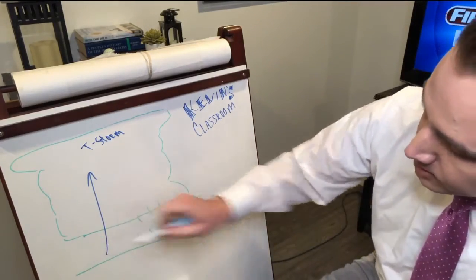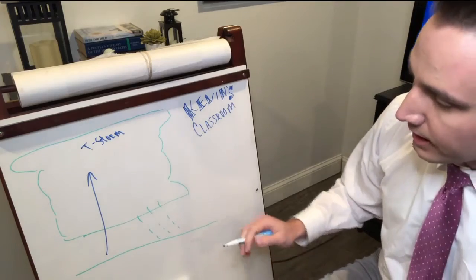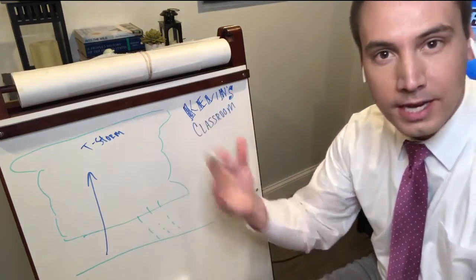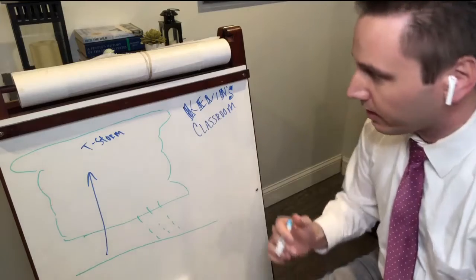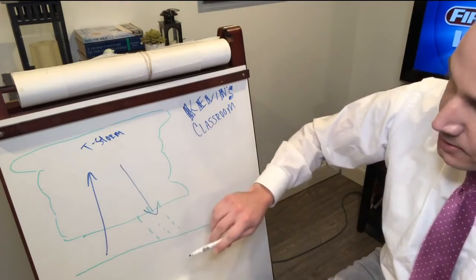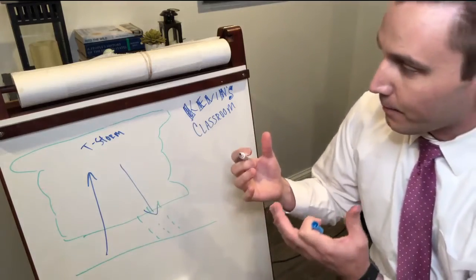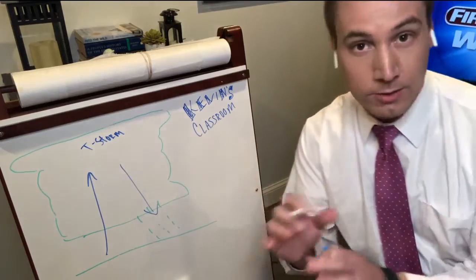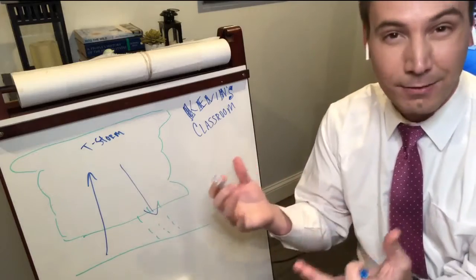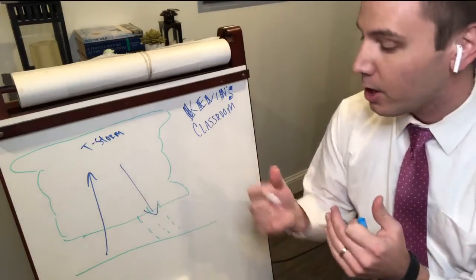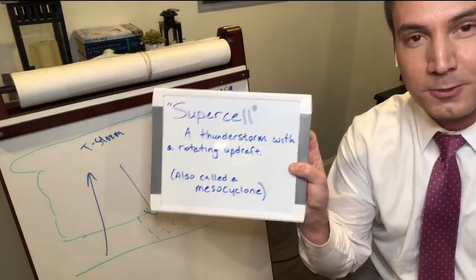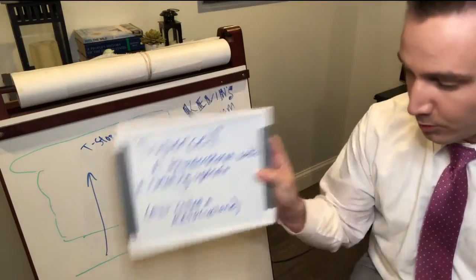So within an updraft, if this starts to rotate, then that's when a supercell is formed. Basically, it's a rotating updraft within a thunderstorm. This is the downdraft too, and that comes out as rain. Most tornadoes — almost every tornado — comes from a supercell storm because it has rotation, but not every supercell will create a tornado. So a supercell is basically a thunderstorm with rotation.